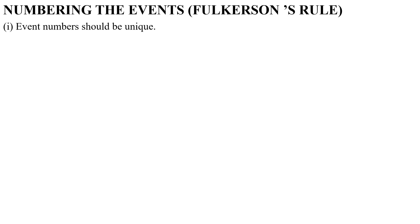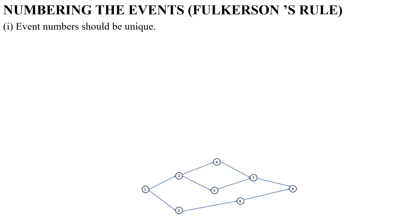First rule is, event numbers should be unique, which means the same number should not be given for different events. In the network diagram below, we have to observe that different events are having different numbers.